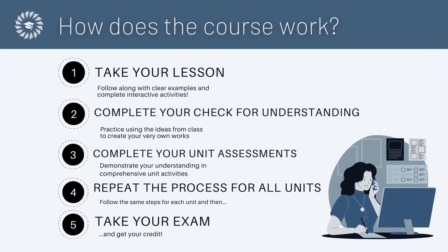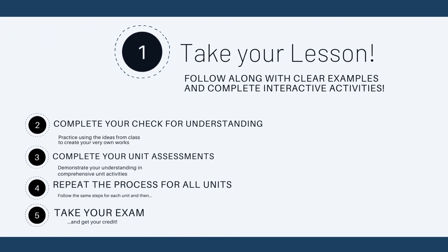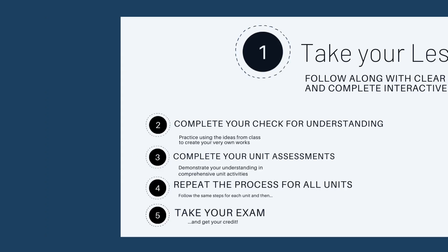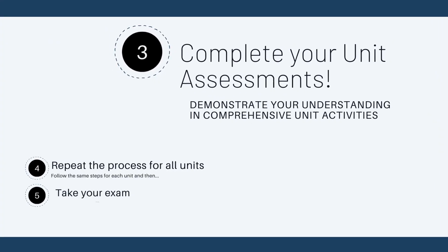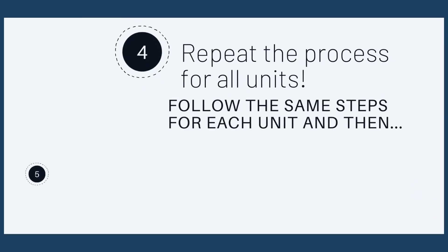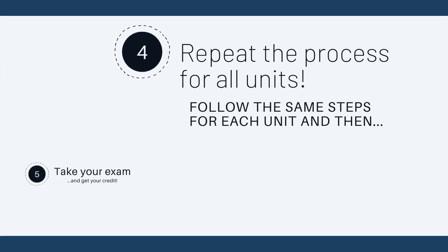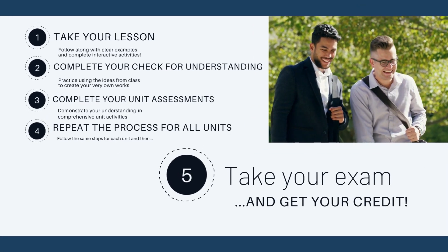So, how does the course work? First, take your lesson — you will follow along with clear examples and complete interactive activities. Second, complete your check for understanding by practicing using the ideas from class to create your very own works. Third, complete your unit assessments to demonstrate your understanding in comprehensive unit activities. Fourth, repeat the process for all units, following the same steps for each, and then take your exam and get your credit.